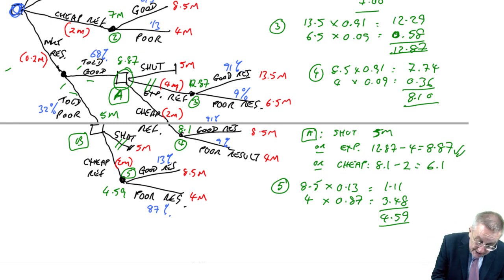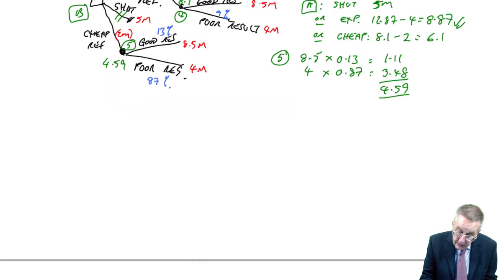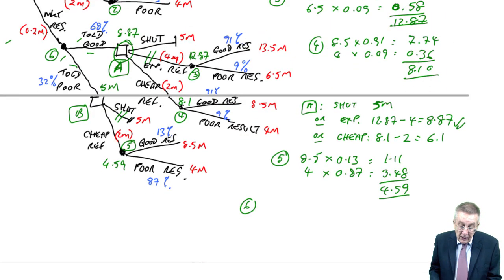So, we know at point six, we know if we do market research, I'm running out of space. If we do market research, we either get, they tell us it's good and we'd get 8.87 or they tell us it's poor, and we'd be shutting, so we get five. And the probabilities, they tell us it's good is 0.68, they tell us it's bad is 0.32.